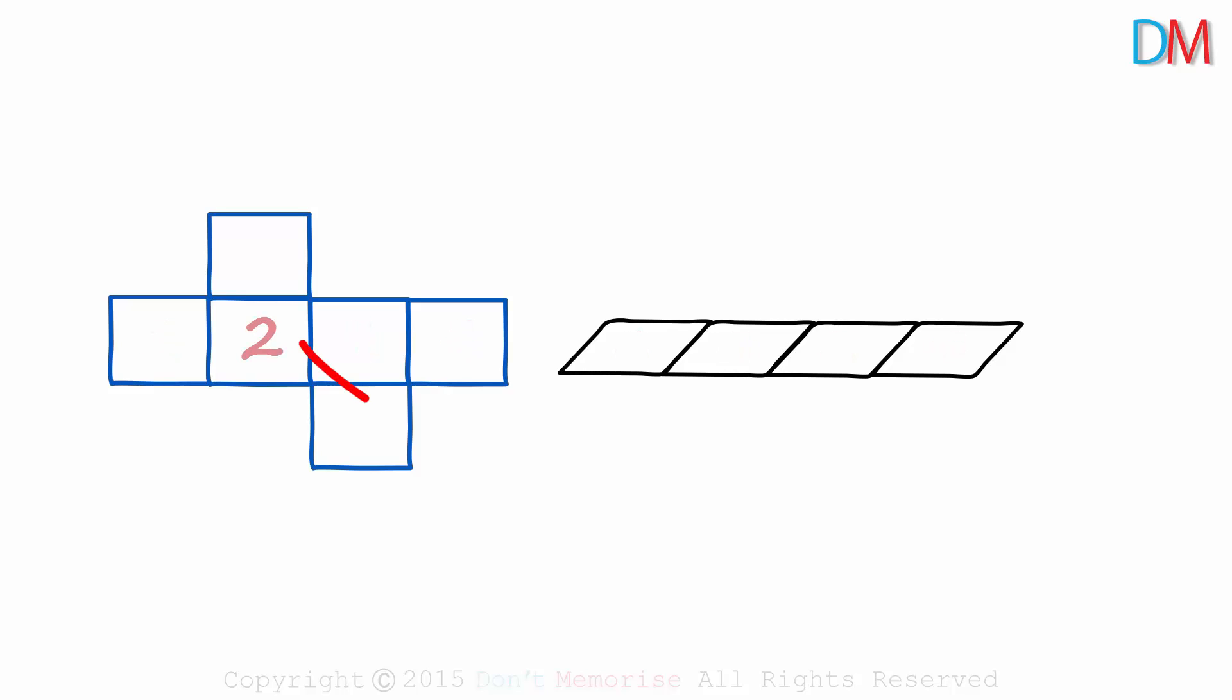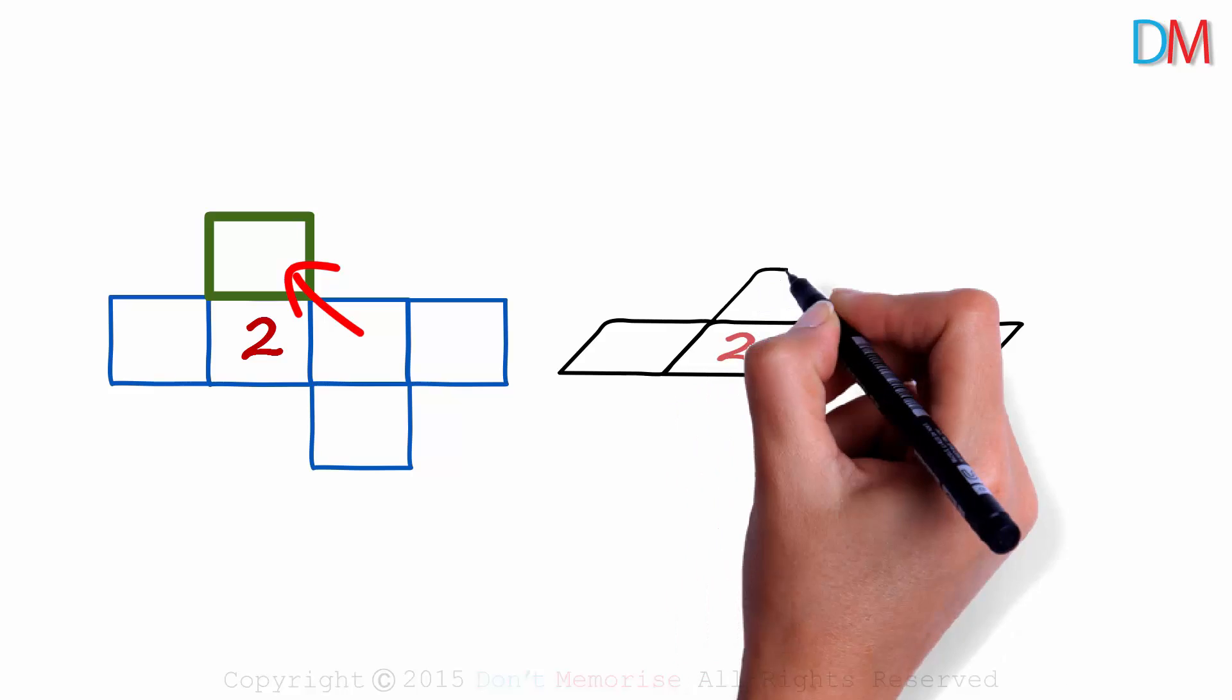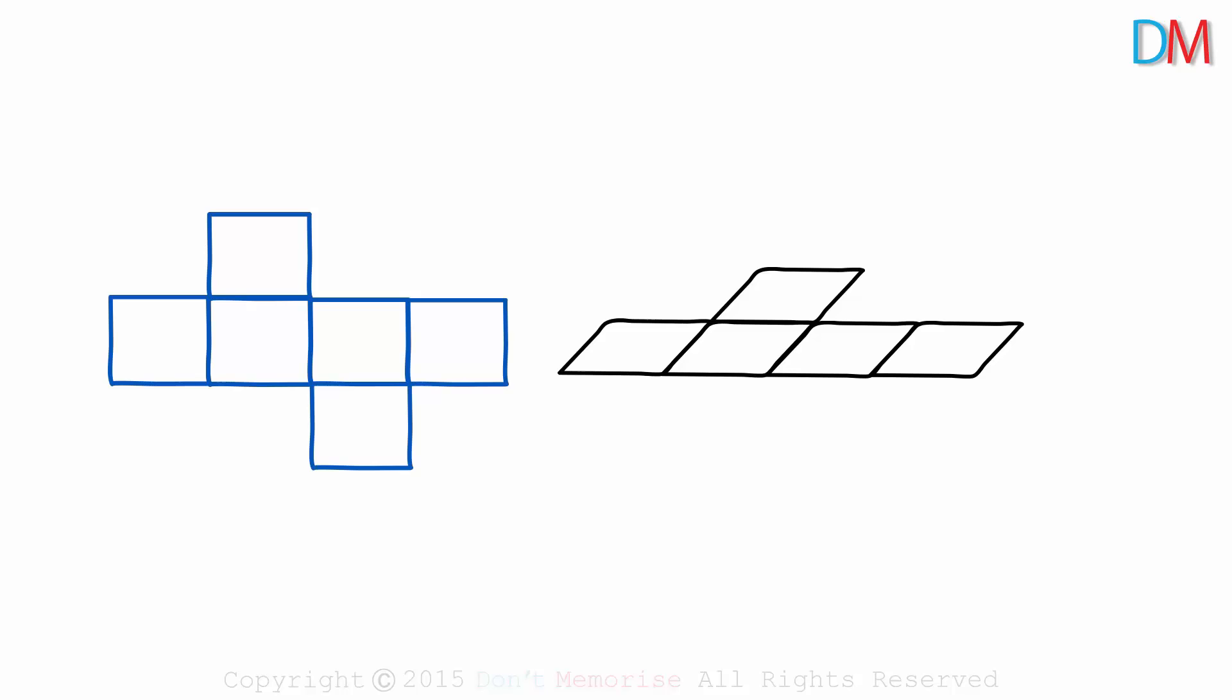Now on top of the second face, we have another face. So we draw that square face like this above the second one. And there is a square face attached to the third square face. This face at the bottom will be drawn under the third face.